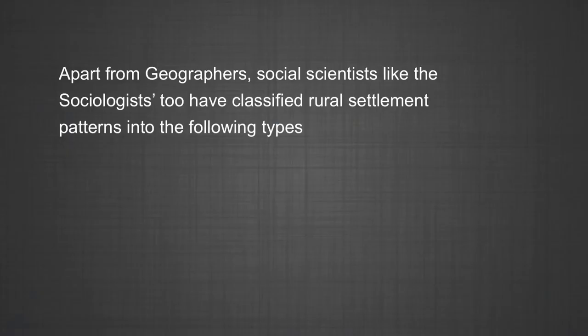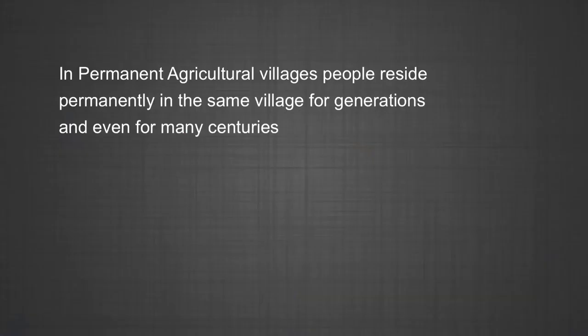Apart from geographers, sociologists too have classified rural settlement patterns into the following types: migratory rural villages, where people live in a particular dwelling only for a few months of a year; semi-permanent agricultural villages, where people live in the settlement for a few years and then migrate to other areas due to loss of fertility of soil or soil erosion; and permanent agricultural villages, where people reside permanently in the same village for generations and even for many centuries.